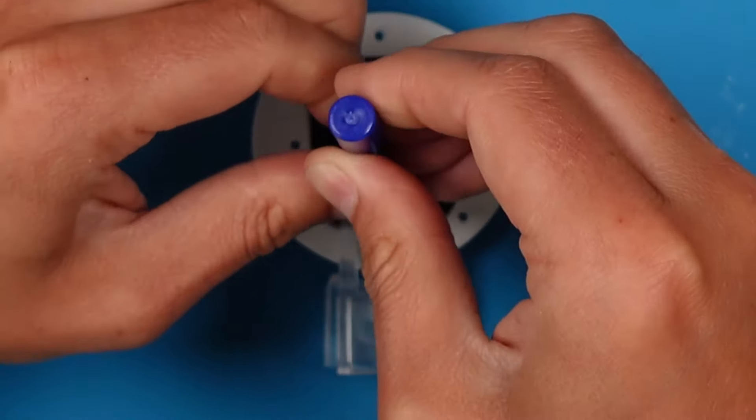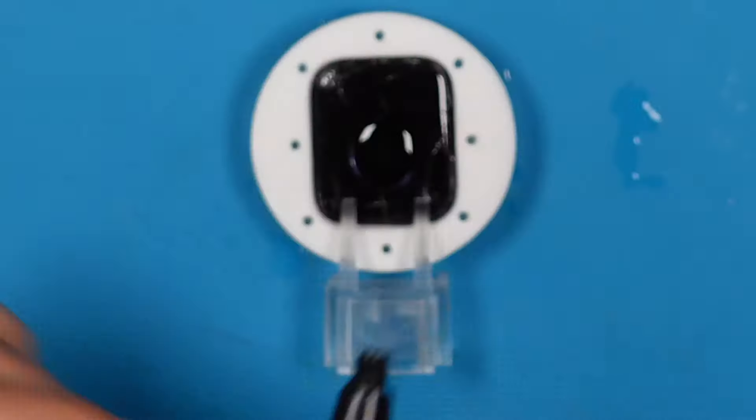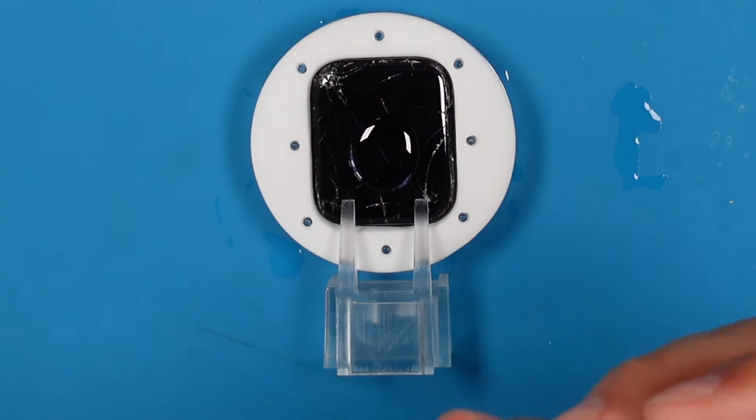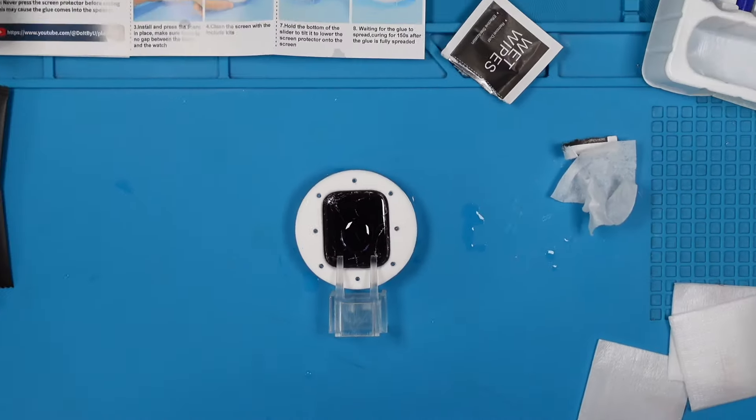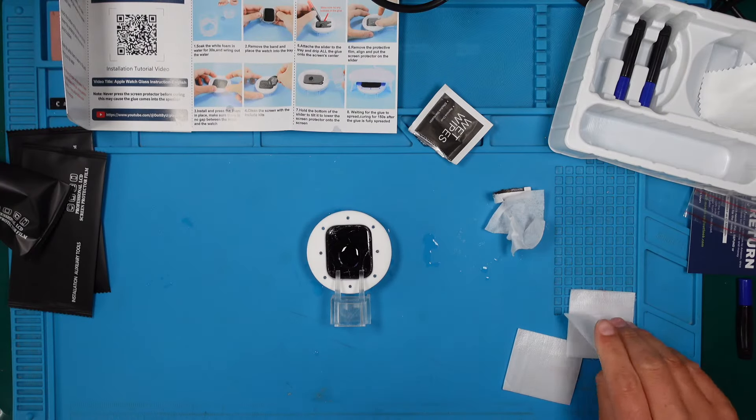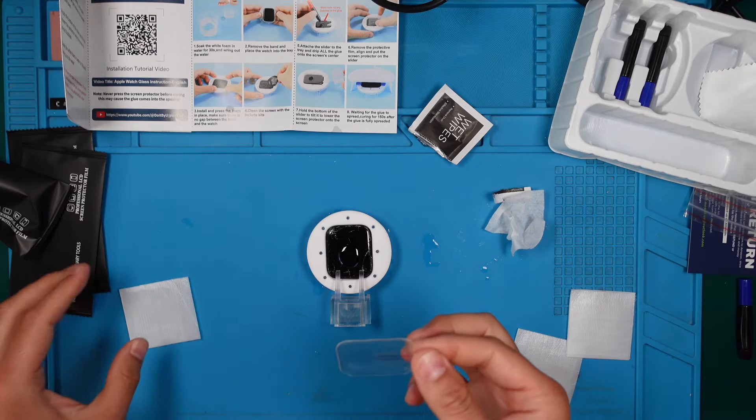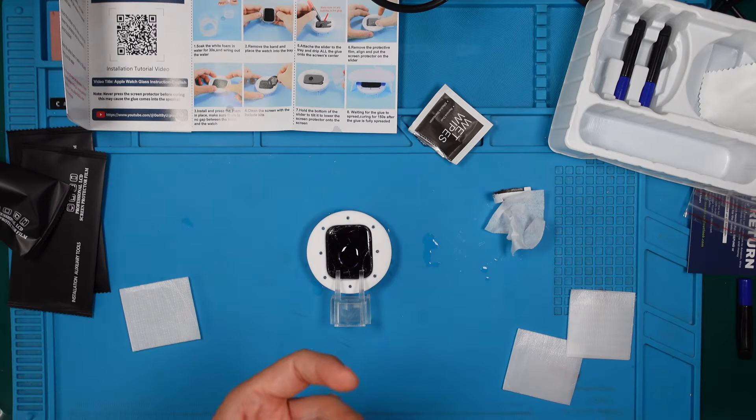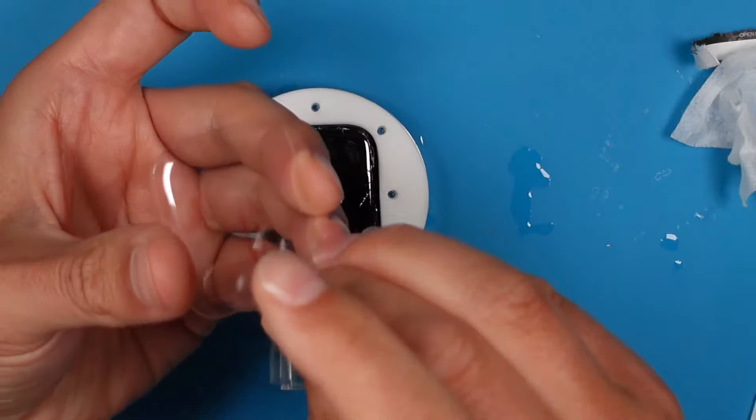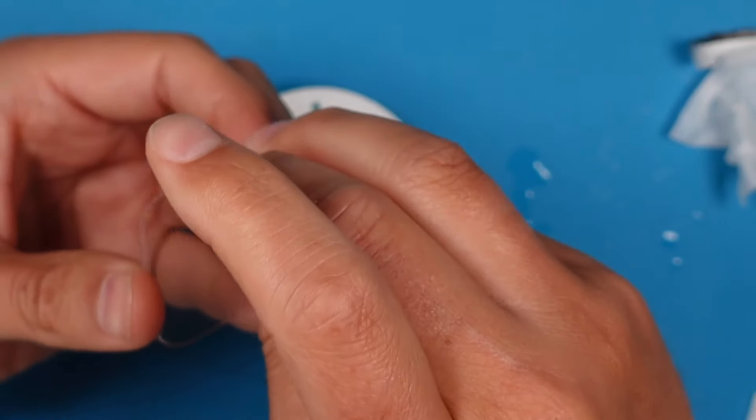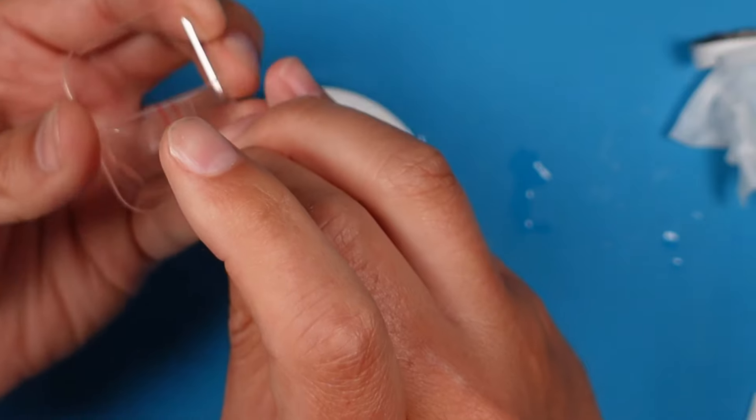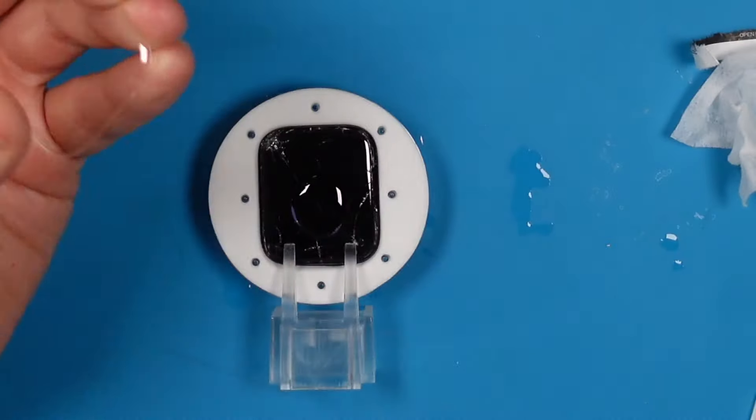So all the glue is now in the middle of the screen. You see the blob. And you see this little angled thing. This will help us to slowly drop down our glass. So here we do have our glass. Let's remove the film. Of course, don't touch it from the inside.